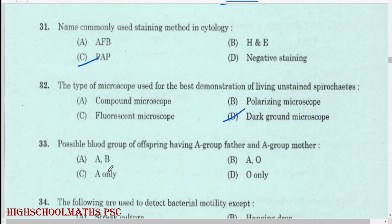Possible blood group of offspring having an A group father and A group mother: A and O.